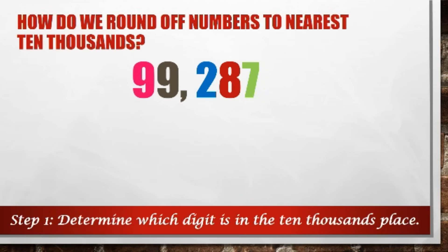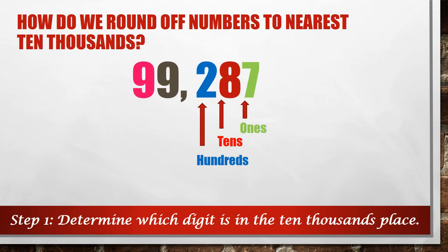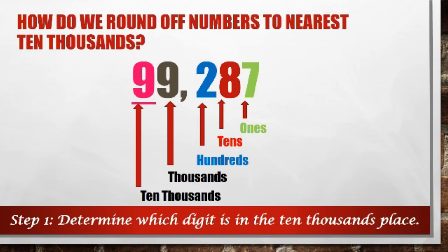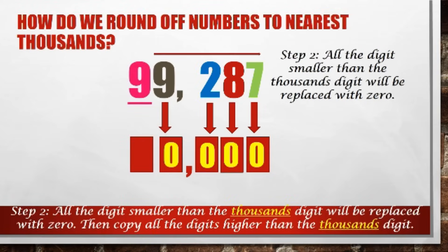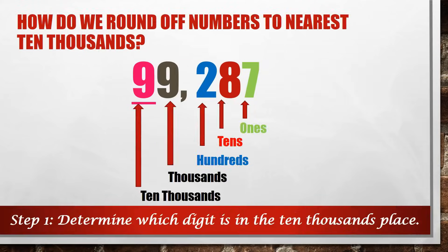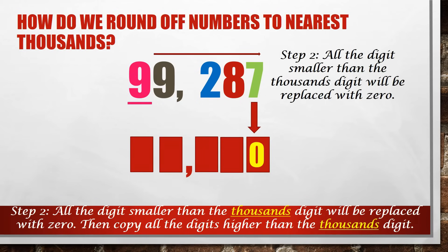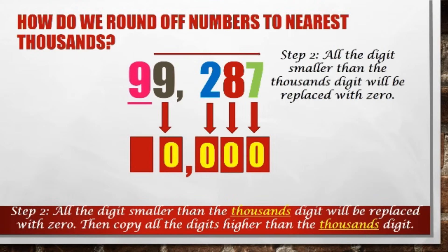Let's try to round off 99,287 to the nearest ten thousands. Step 1: determine which digit is in the ten-thousands place — ones, tens, hundreds, thousands, ten-thousands. 9 is in the ten-thousands place. Let's underline 9 as the digit we need to round off. Step 2: all digits to the right of 9 will be replaced with 0 — so 7 becomes 0, 8 becomes 0, 2 becomes 0, and 9 becomes 0. Then copy all digits higher than the ten-thousands digit. In this example, no digit is higher, so we proceed to step 3.